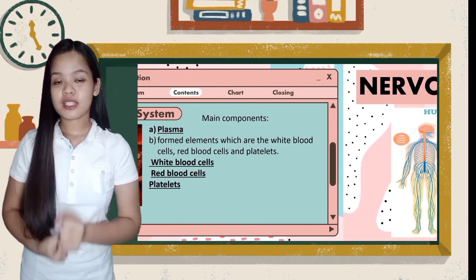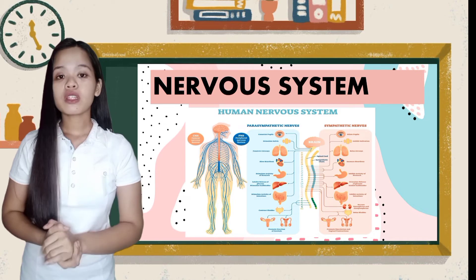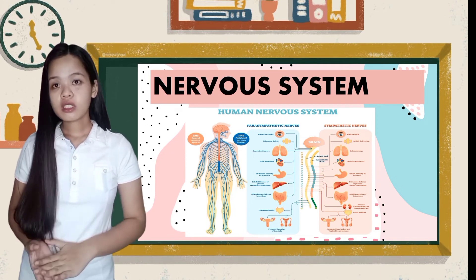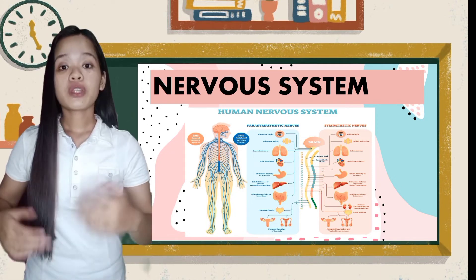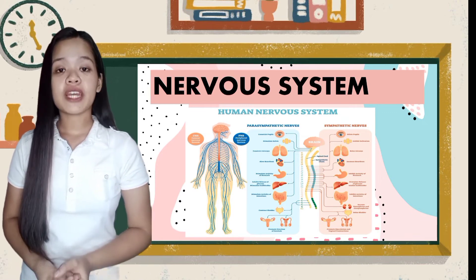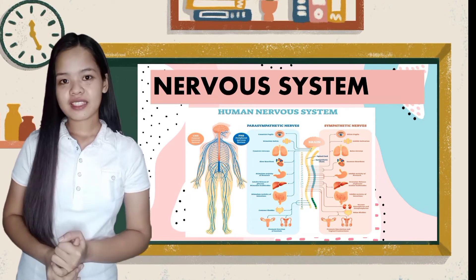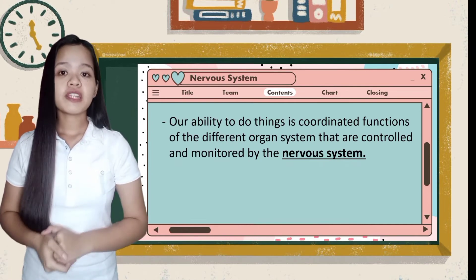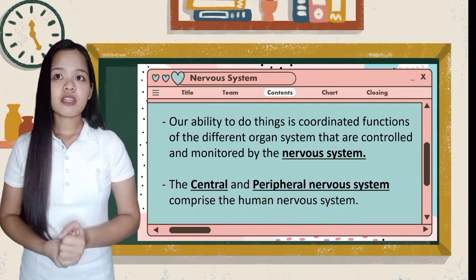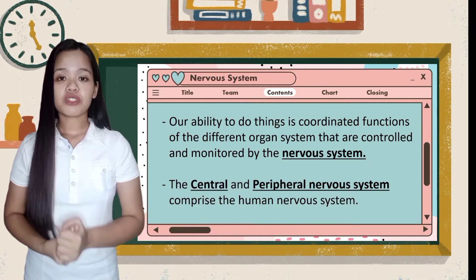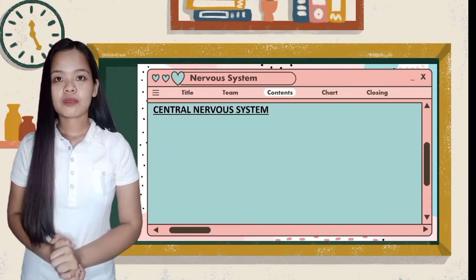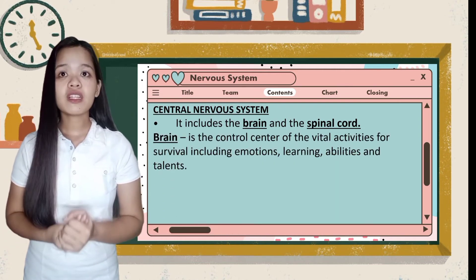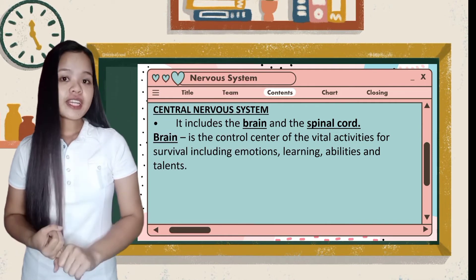The nervous system is the major controlling, regulatory, and communicating system in the body. It is the center of all mental activity including thought, learning, and memory. Together with the endocrine system, the nervous system is responsible for regulating and maintaining homeostasis. Our ability to do things is coordinated by the functions of different organ systems controlled and monitored by the nervous system, which is comprised of the central and peripheral nervous system.